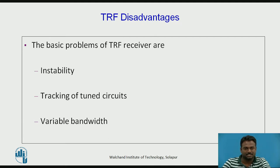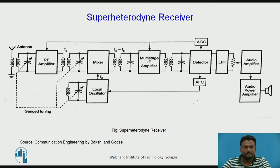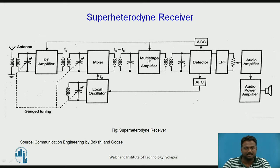This is the super heterodyne receiver. A slight modification has been made to the TRF receiver by adding a local oscillator, a mixer, and a multi-stage IF amplifier stage. These are the three additional blocks added. The TRF receiver already has an RF amplifier stage, detector stage, audio amplifier, audio power amplifier, and loudspeaker.